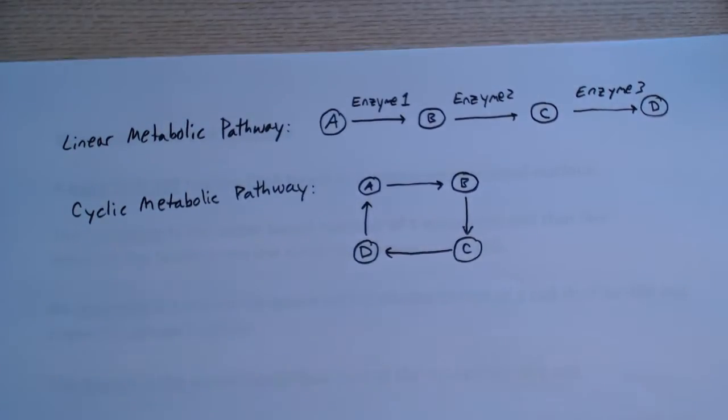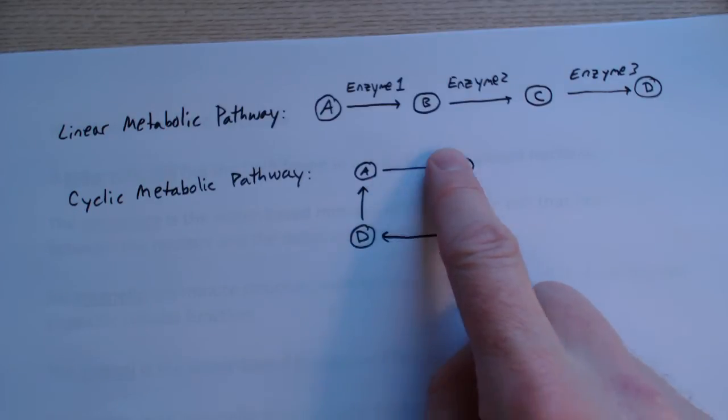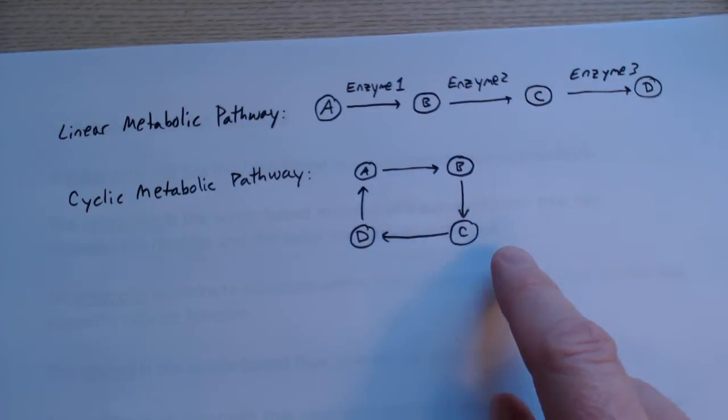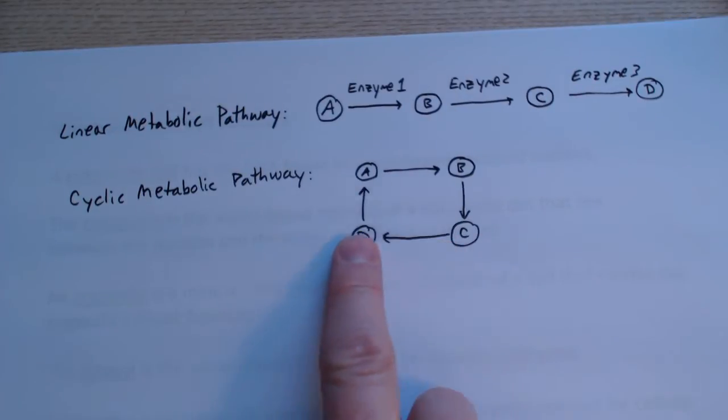We also have cyclic metabolic pathways where A goes to B to C to D, and then D goes back to A, which seems like a waste of time. But what they've left out here are the side products and the energy that are produced or absorbed all along the way. Going around in the circle, other material comes in, either matter or energy, to keep driving the cycle along.